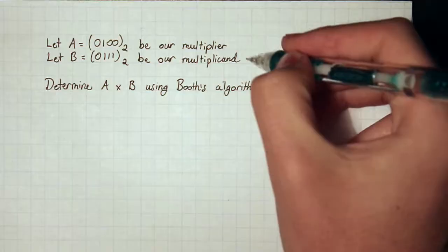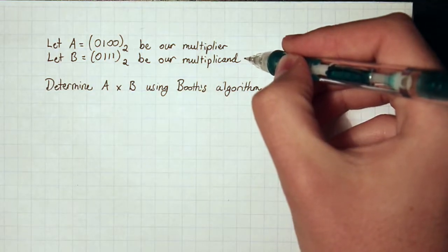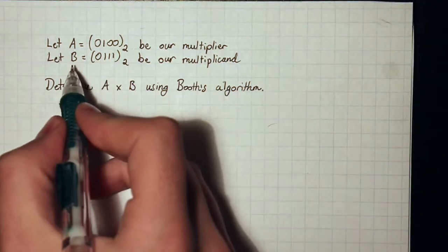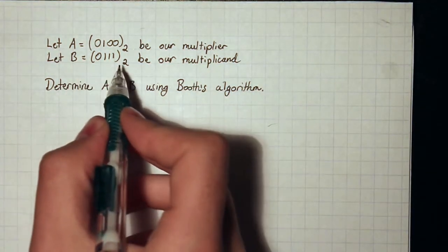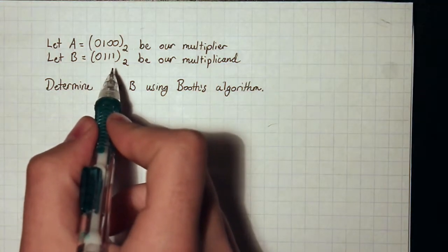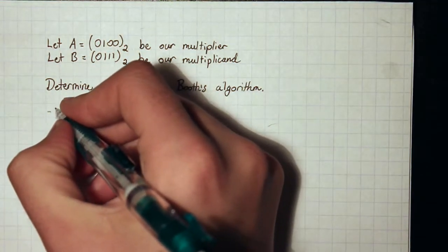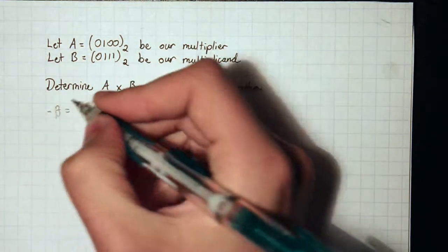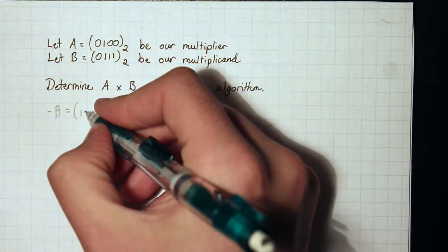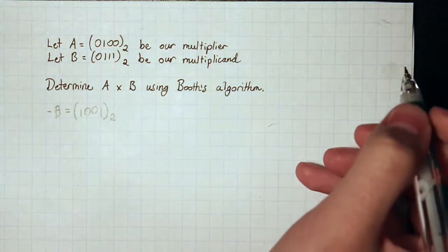One other thing to consider before we do our setup is that we're going to be adding and subtracting this multiplicand to our product register, or to the left half of the product register. So the first step is to represent the inverse of B in two's complement. B is 7, and we have 4 bits, so we need to represent negative 7. You invert all the bits and then add 1, so we get 1001, which is negative 7 in two's complement.